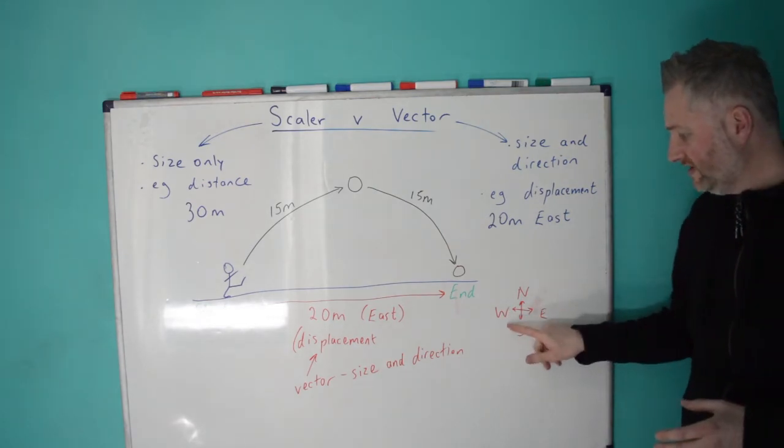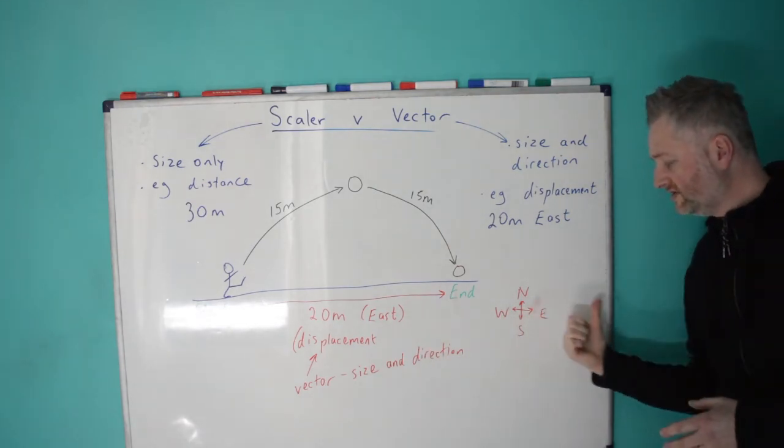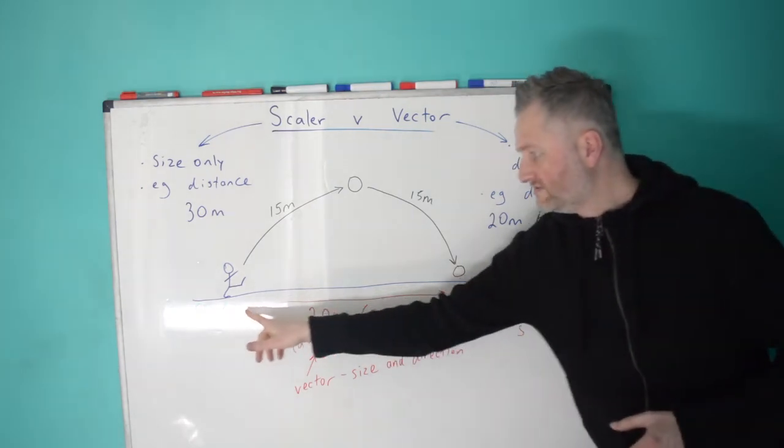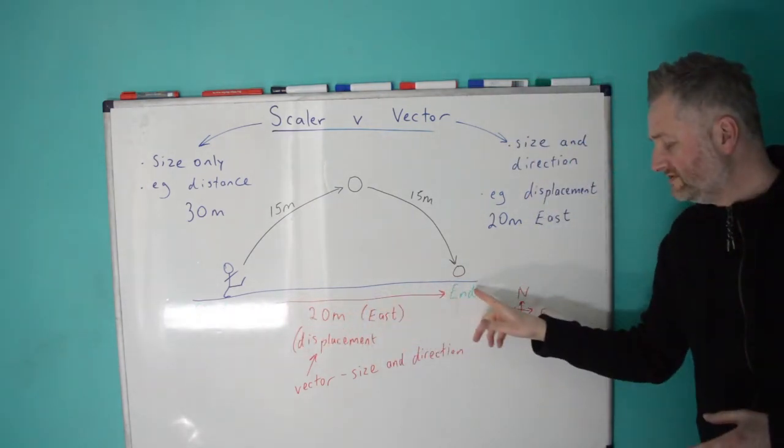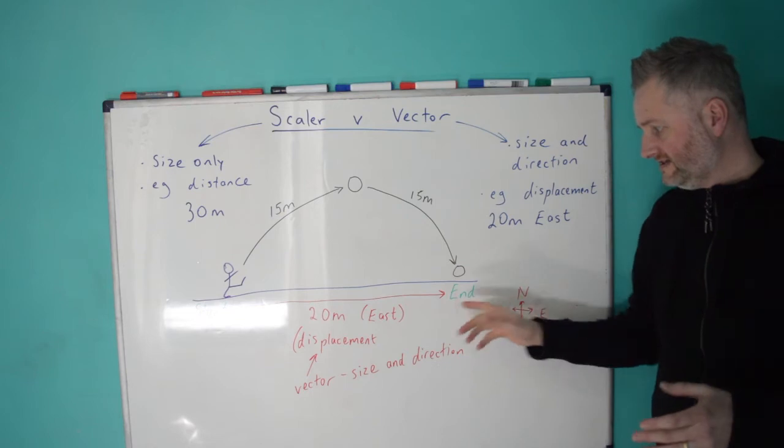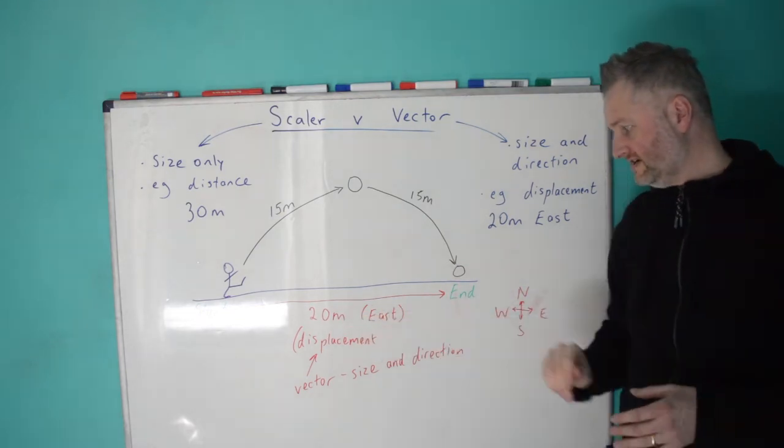And what's the direction? Well, remember, never eat shredded wheat. So, east is coming across to the right here. So, since the ball came across to the right, from left to right, it's east. So, it's 20 metres east.